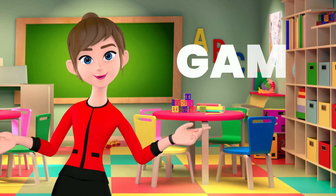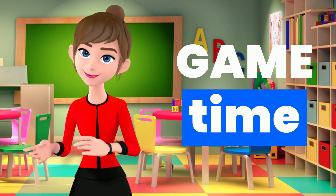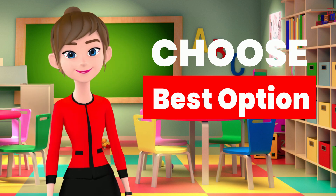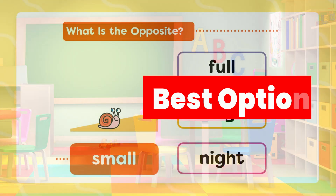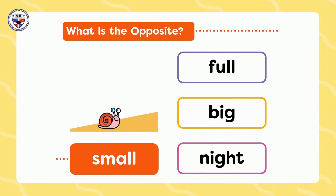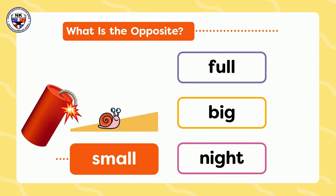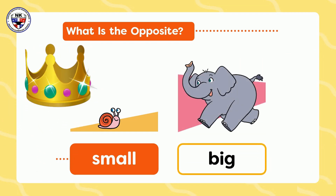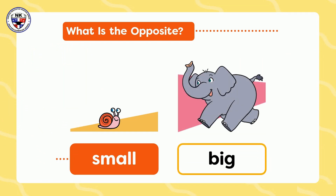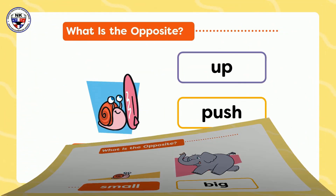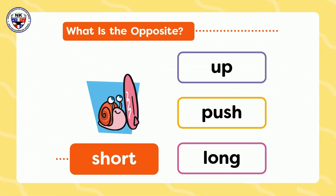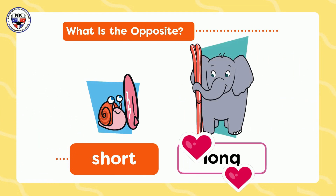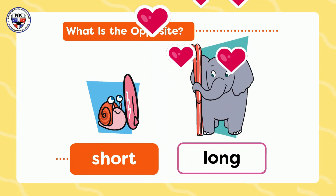Now is game time. Choose the right option. What is the opposite of small? Big — excellent job. What is the opposite of short? Long — awesome.